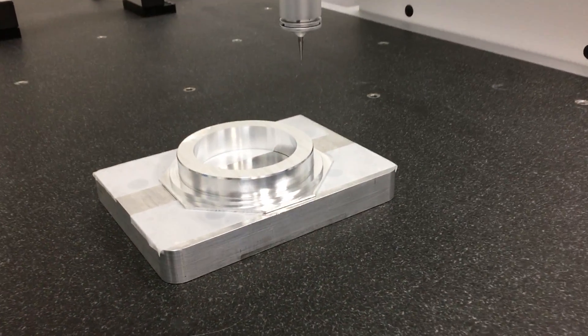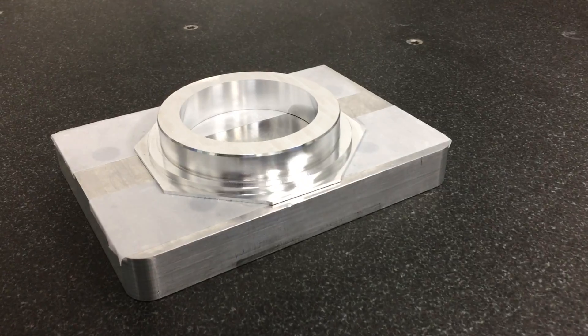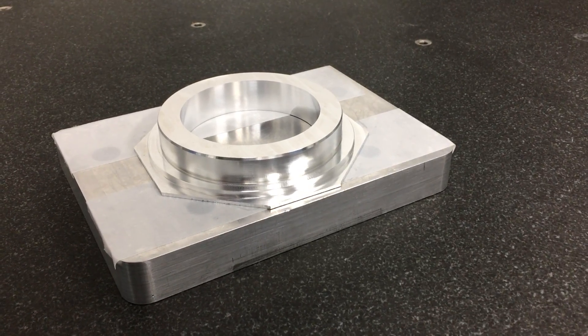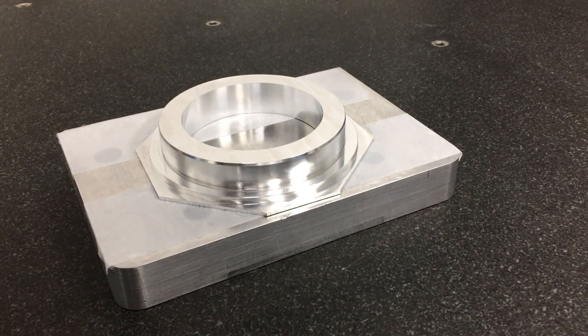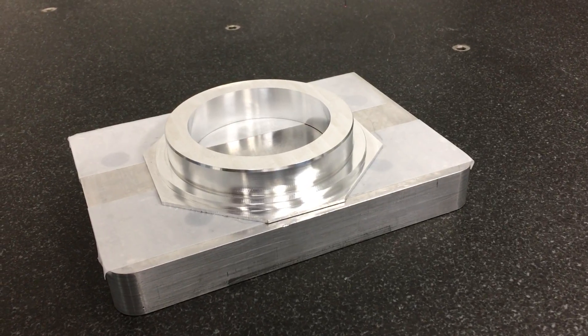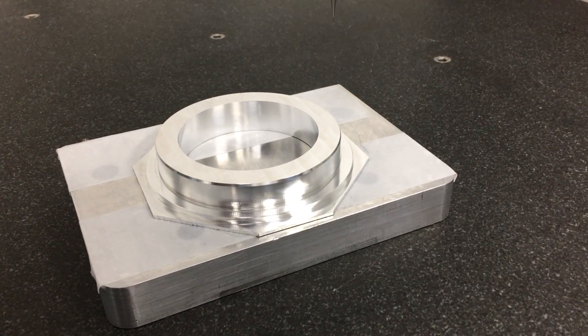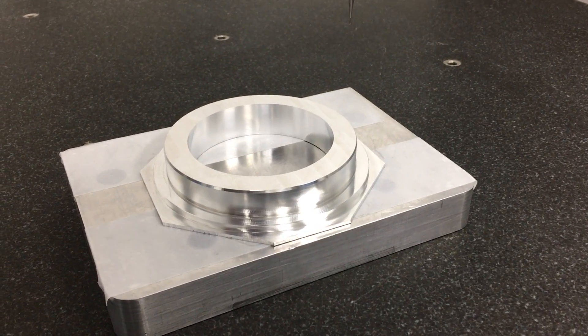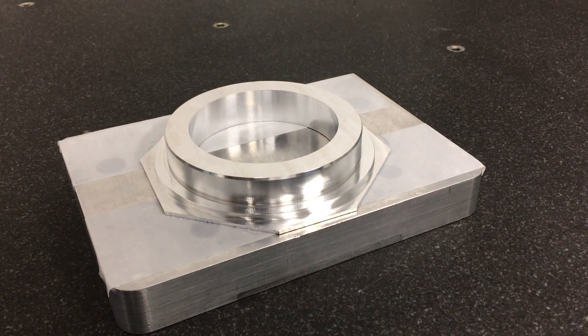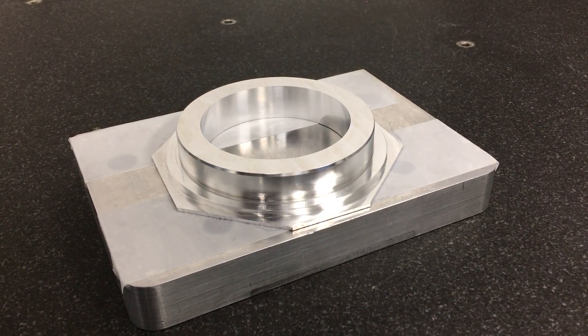Yesterday I posted a video of us doing some high-speed machining using our Datron M8 Cube for the first side, the first operation on this aluminum ring. This is 6061 aluminum, and you remember from the video we cut this at a very high speed.